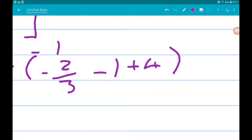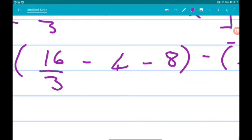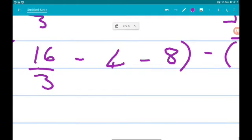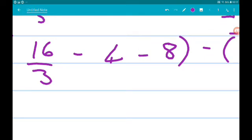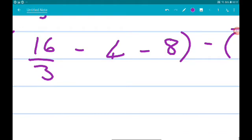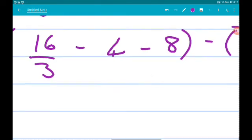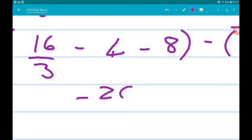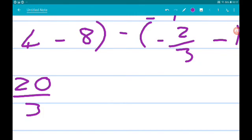OK. So we get, now 4 is 12 thirds, 8 is 24 thirds. So we've got 16 thirds minus 36 thirds. So we get minus 20 thirds. Remember you can use your calculator. So we got minus 20 thirds minus.